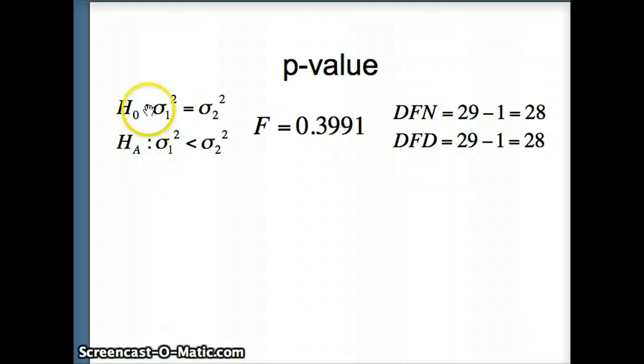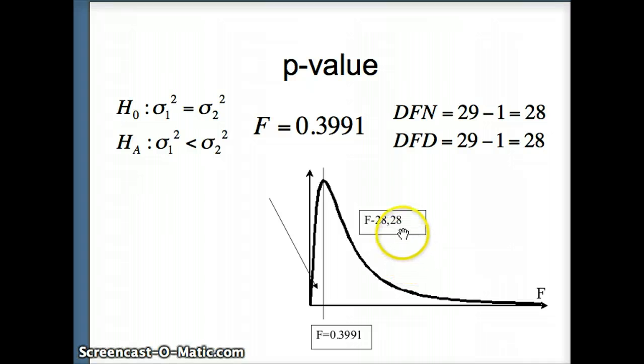So we want to find our p-value. There's our H0 and our HA, there's our test statistic F, dfn, dfd. Notice here our F is less than 1, so we'll go on the left side of the graph, left side of the distribution. So we have an F 28, 28. We have F is 0.3991. And that's probably an exaggerated position. We want to get the area to the left of 0.3991.